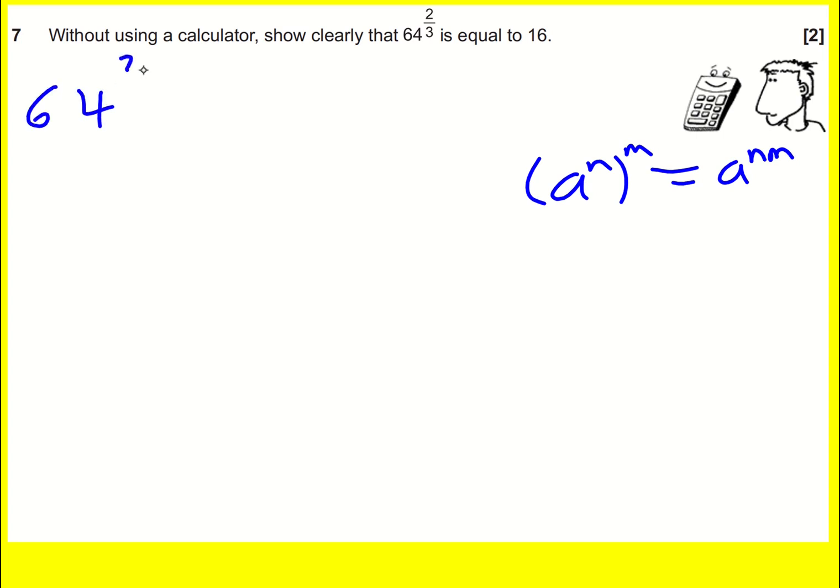Because 64 to the 2/3 equals 64 to the 1/3 times 2, and therefore that equals, if we want to undo this and go this way, it equals 64 to the 1/3 squared.